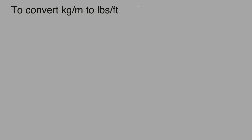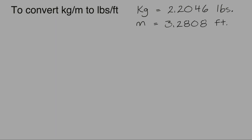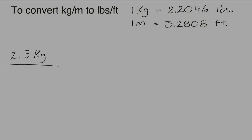To convert kilograms per meter to pounds per foot, we will need to use two conversion factors. One kilogram is equal to 2.2046 pounds and one meter is equal to 3.2808 feet. So if we wanted to convert 2.5 kilograms per meter to pounds per foot, there are two things we need to do: convert the kilograms to pounds and the meters to feet.